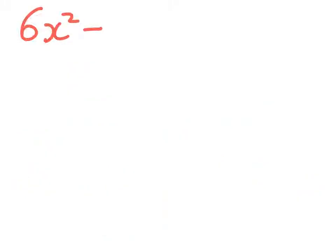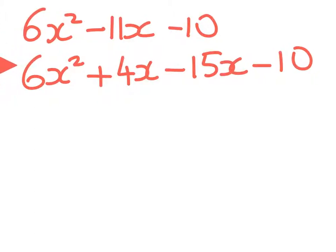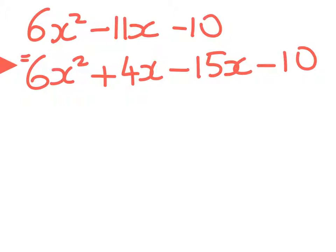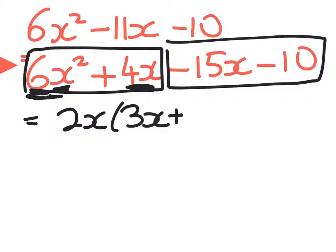So we get 6x squared plus 4x minus 15x minus 10. Let's put a box around the first two and a box around the second two. We're going to factorize them separately, but we're going to have a common factor pop up. So the common factor here, we've got 6x and 4x. So we can take out 2x and we get times 3x plus 2.